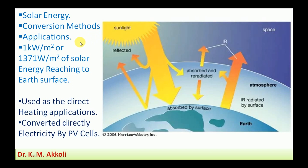There are different conversion methods. Whatever we receive in the form of heat and light should be converted into a useful form. One basic thing we should know is that 1 kilowatt per meter square, or 1371 watts per meter square, of solar energy reaches the Earth's surface. From this we can estimate the total energy received over the entire Earth's surface.